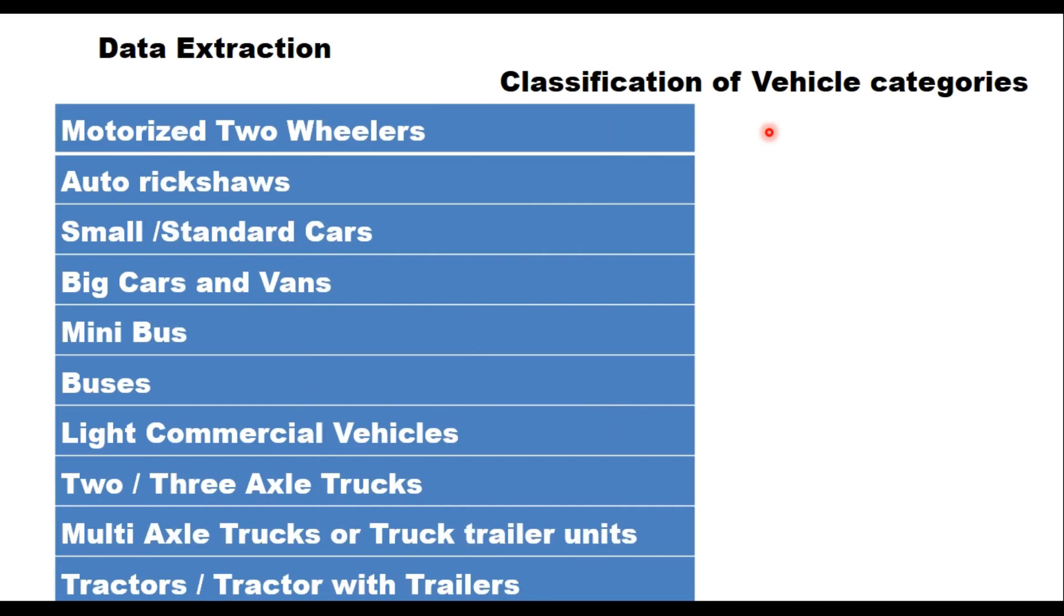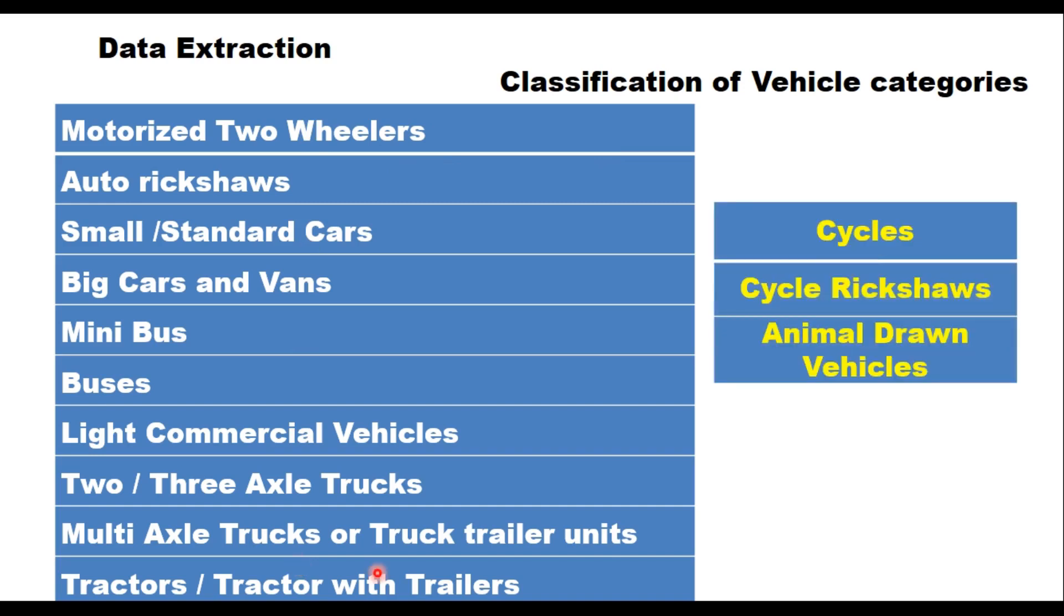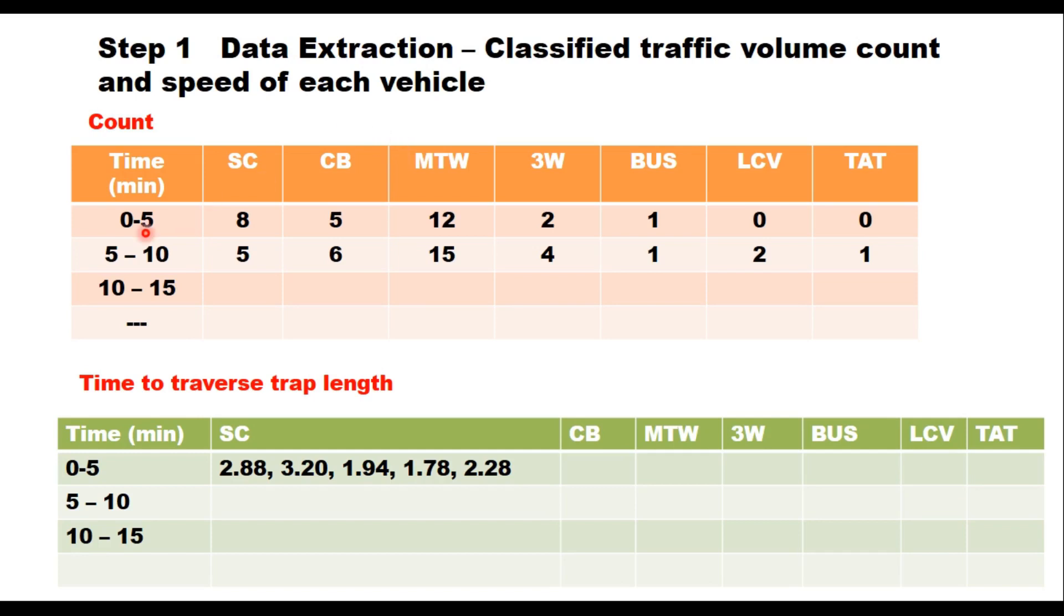For that you need to classify the vehicle categories depending upon the traffic composition. You can categorize the traffic stream into different vehicle types and make a table. For data extraction, for each 5 minute interval, suppose you classify the vehicles into 7 categories: standard car, big car, motorized 2 wheeler, 3 wheeler, bus, LCV and tractor trailer unit. For each 5 minute interval you count the number of vehicles passing through the first line of reference and note down in this table.